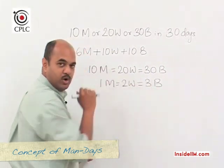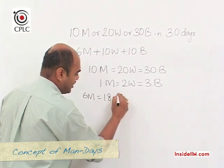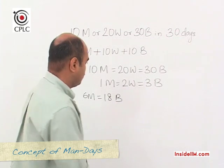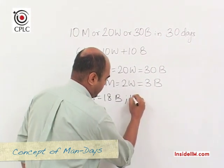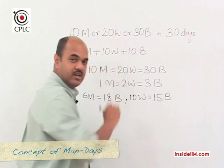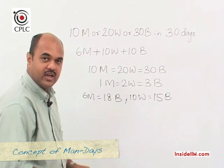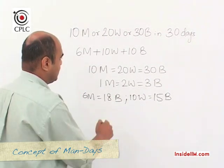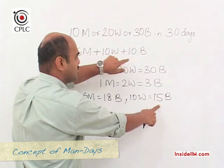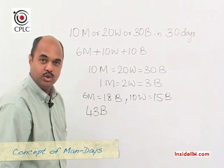Since 1 man = 3 boys, 6 men = 18 boys. Since 2 women = 3 boys, 10 women = 15 boys. Adding the actual 10 boys, the total effective workforce is 18 + 15 + 10 = 43 boys.